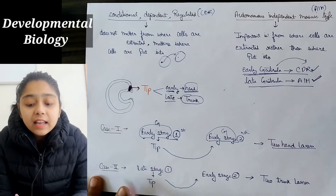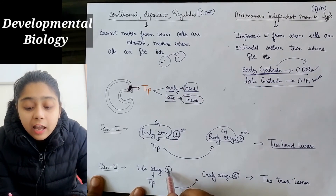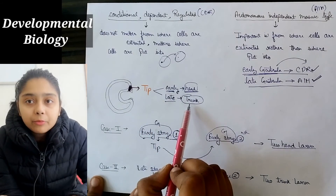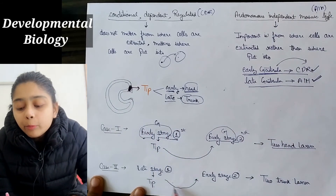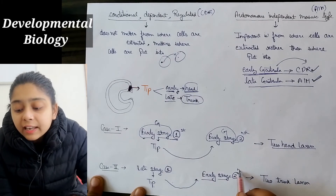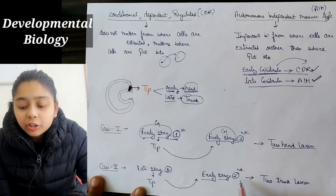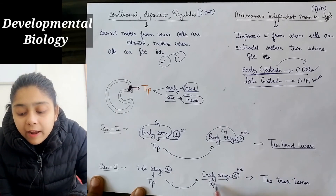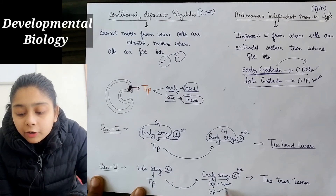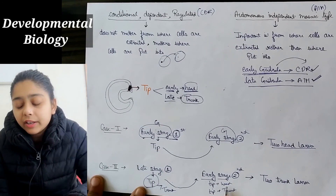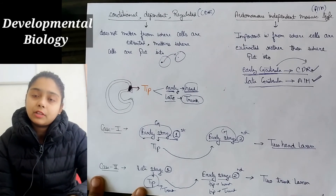The second case involves the late gastrula stage. In late gastrula, the tip cells are now specified for trunk formation. If we take the tip from the late gastrula stage and put it into another early gastrula embryo, the transplanted tip forms a trunk while the host embryo already has its own head. So the result is a larva with two trunks.